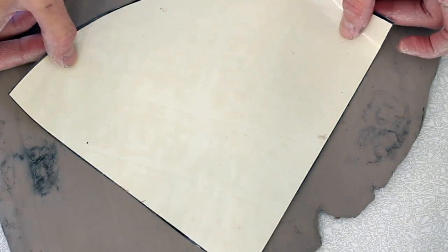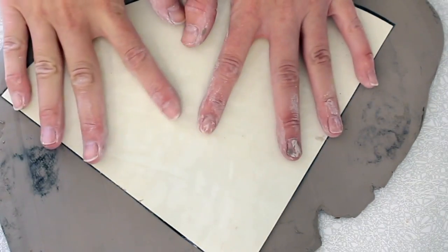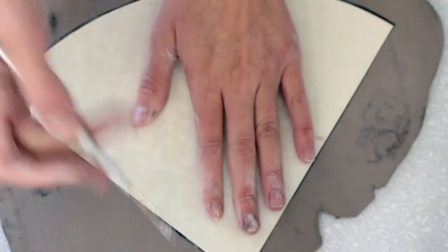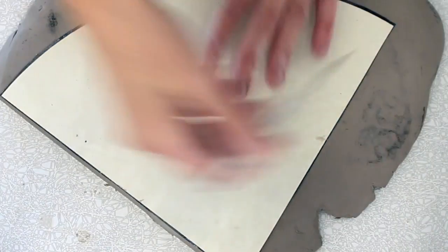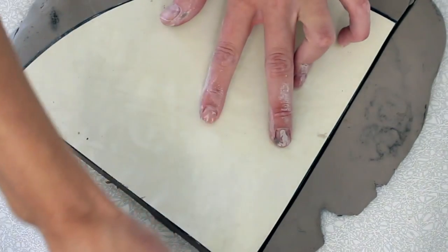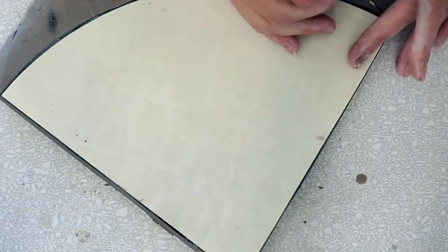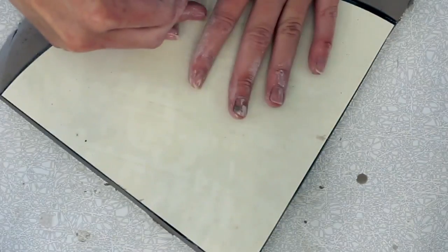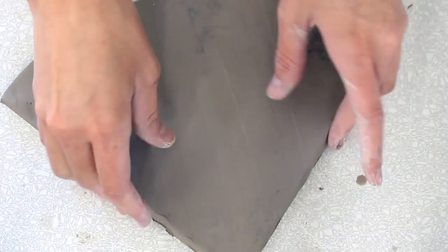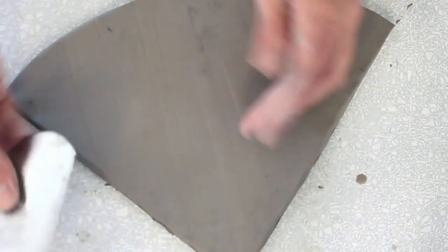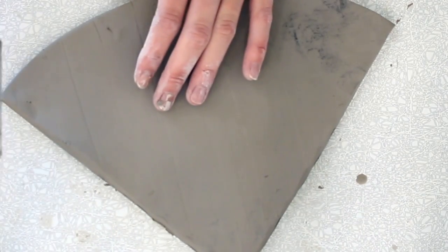I'm going to take my template for my body and I'm going to place it onto the slab. Using my needle tool I'm going to carefully cut out this sort of pizza shape. This is going to be the body of my bobble head. You want to carefully lift this up. If it's stuck to your table I suggest getting your metal rib and just kind of sliding it under and lifting up the side. You can sort of peel it off.